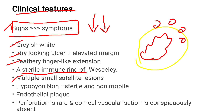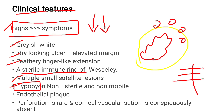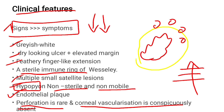Hypopyon is an important feature — it is non-sterile and non-mobile. The fungus can penetrate the corneal layers and forms a non-sterile, non-mobile hypopyon due to its thick nature. Endothelial plaque can also be appreciated. Perforation is rare and corneal vascularization is conspicuously absent.